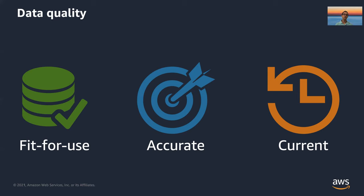Being current is also becoming a critical need for fast-moving companies. It used to be okay for data to be 12 or 24 hours old because data processing just simply took time. But we now need data to be as current as five minutes or even a few seconds. Stale data is the same as inaccurate data — we don't want to make decisions based on it.